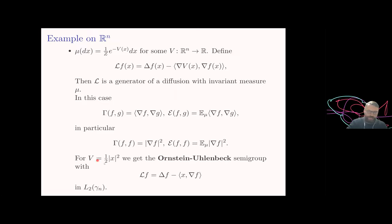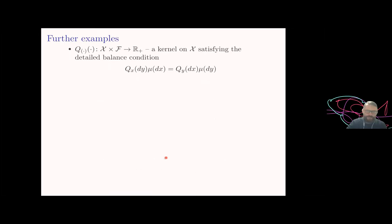For the Gaussian potential we get the Ornstein-Uhlenbeck semigroup with the corresponding generator, which was used by Joe, for example, in his proofs for the Gaussian isoperimetric inequality. This shows that the framework covers our previous setting. Let me now move to examples that will be more interesting for us today.